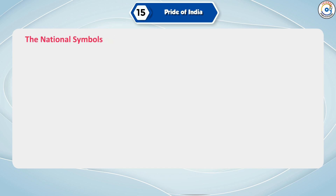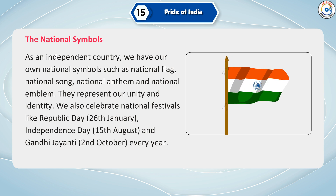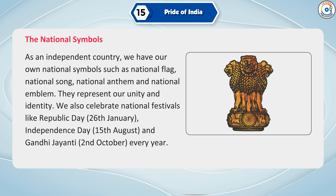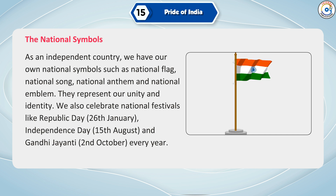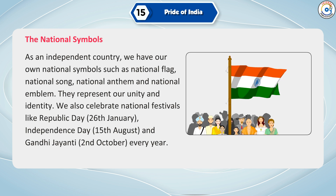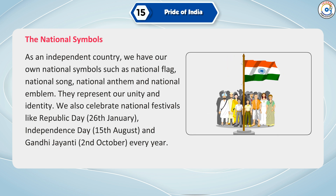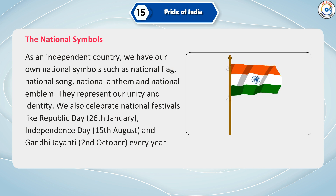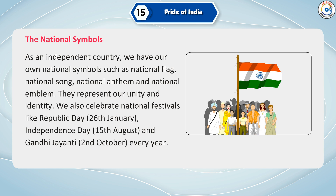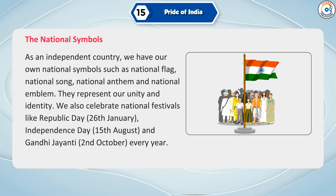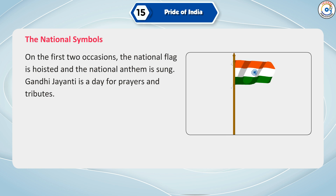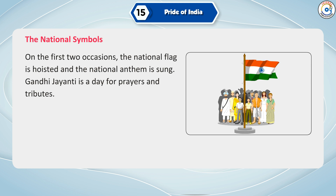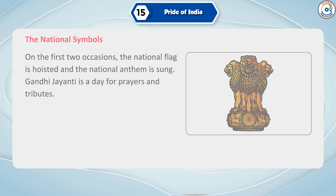As an independent country, we have our national symbols such as national flag, national song, national anthem and national emblem. They represent our unity and identity. We also celebrate national festivals like Republic Day on the 26th of January, Independence Day on the 15th of August and Gandhi Jayanti on 2nd October every year. On the first two occasions, the national flag is hoisted and the national anthem is sung. Gandhi Jayanti is a day for prayers and tributes.